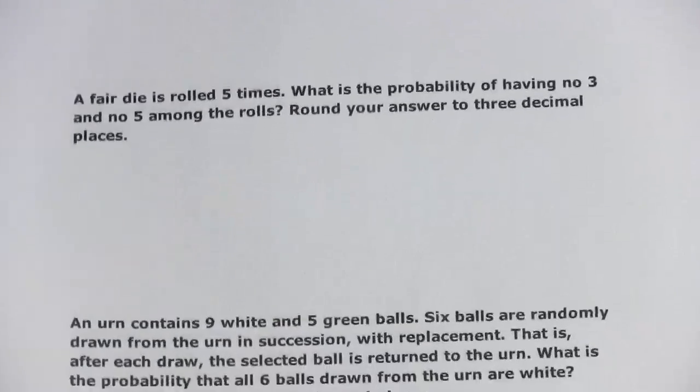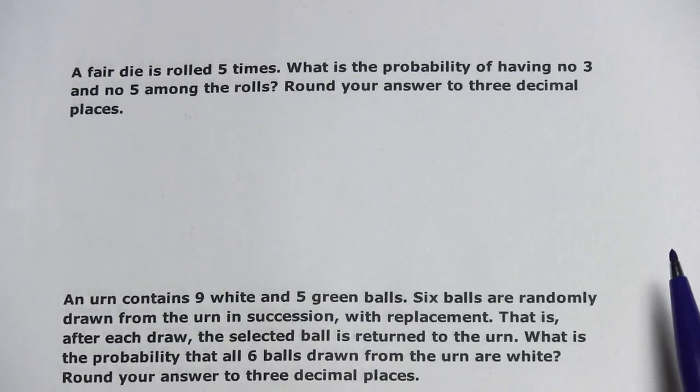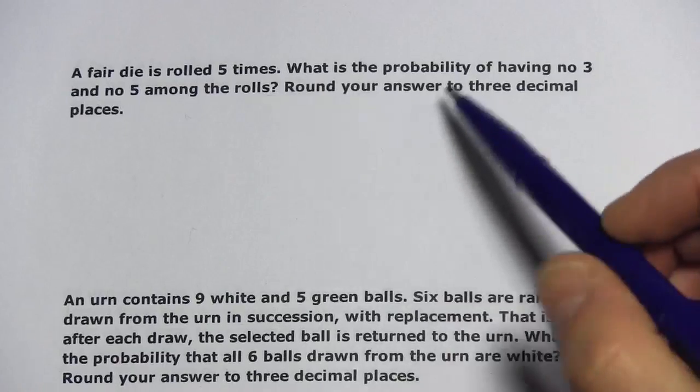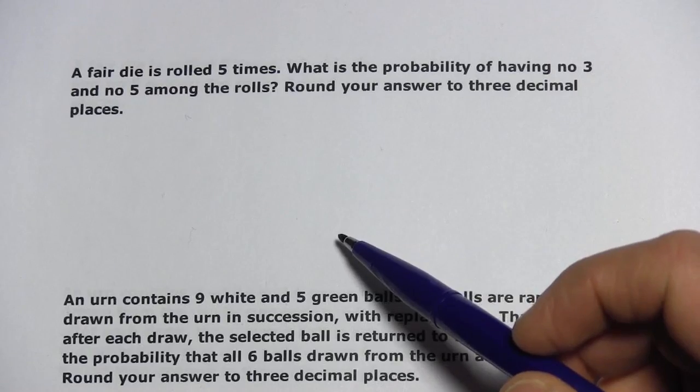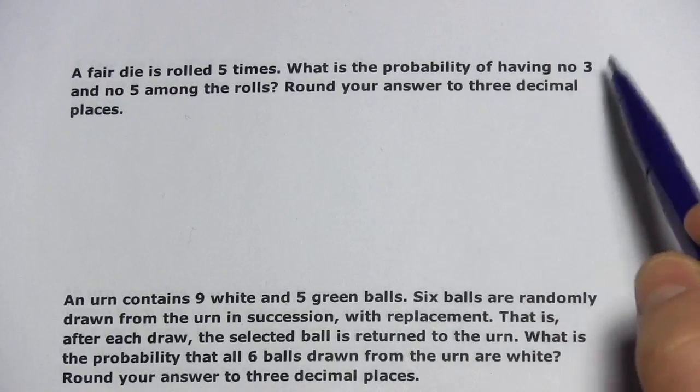Alright, let's try another one. This one is actually a little bit easier. A fair die is rolled five times. What is the probability of having no three and no five among the rolls? Again, we're going to round to three decimal places.